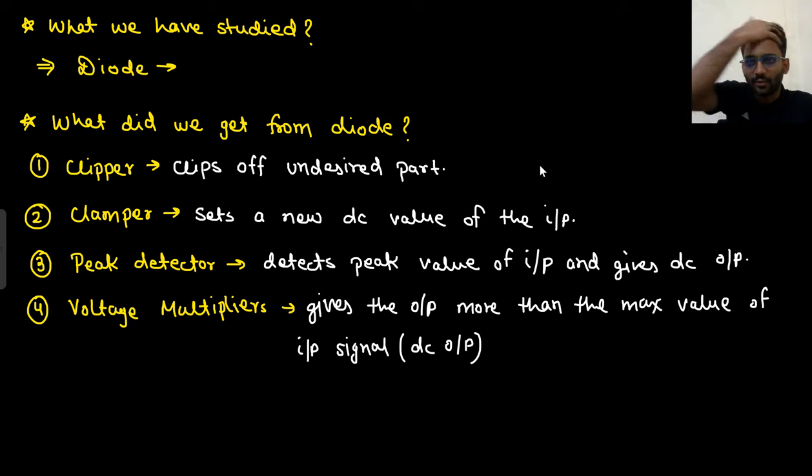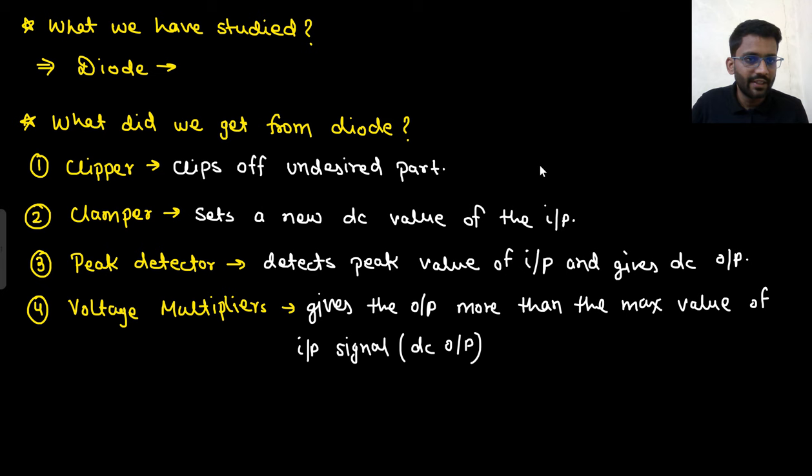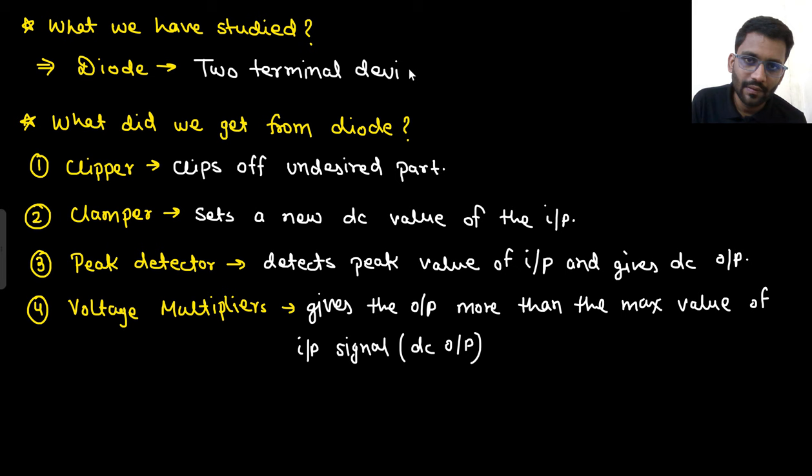Let's see what we are going to study in this lecture. We have already studied the diode, which was a two-terminal device. This was the structure of the diode — a two-terminal device with terminal one and terminal two.